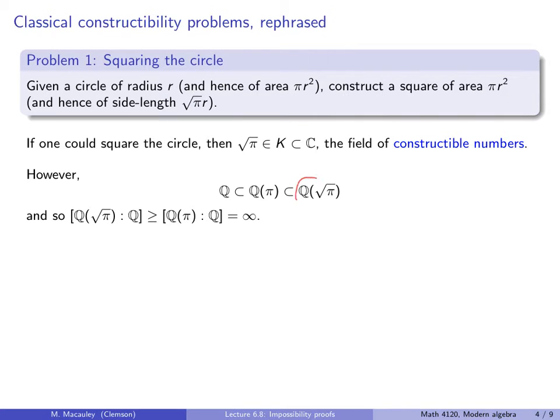However, this field q adjoined the square root of pi, I claim, does not even have finite degree over q, so it can't have degree 2 to the n. And to see why, notice that q adjoined root pi is a bigger field than q adjoined pi. Now why? Well, pi is clearly in both of these fields, because I can take the square root of pi and square it to get pi. However, the square root of pi cannot be constructed from pi using just arithmetic. So the degree of q adjoined root pi over q has to be at least as large as the degree of q adjoined pi over q, which is infinite because pi is a transcendental number. It is not the root of a polynomial with integer coefficients. That is a fact that was proven in the 19th century.